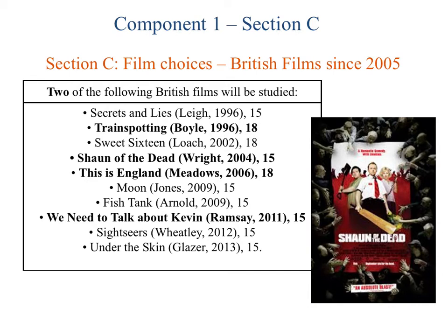Component 1, Section C looks at British films since 2005, and there'll be a number of films here that you will have come across or heard of. We've got Trainspotting from 1996, Shaun of the Dead, This Is England, and another one that you may not have come across — We Need to Talk About Kevin — a very clever, very dark film.